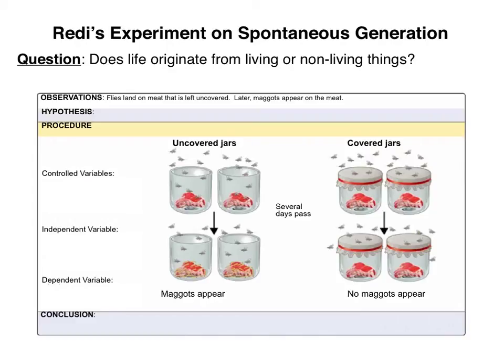Hopefully at this point you've written your hypothesis. Does your hypothesis have the two parts that you need? Does it have your prediction? And does it have your explanation? Did you use if, then, and because? If you did, great. If you didn't, not a big deal — the goal is to write a hypothesis that has both the prediction and the explanation components.